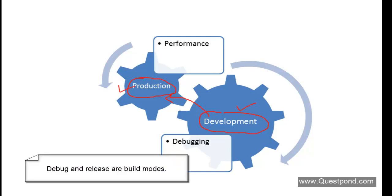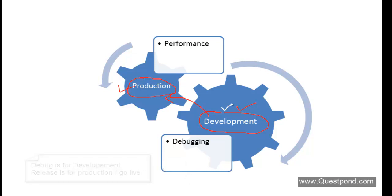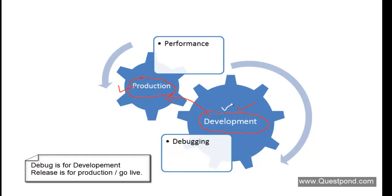Debug and Release are build modes. We use Debug mode when we are writing code or developing the application. We use Release mode when we want to go live or push the DLLs, EXEs, or fully compiled code to production.